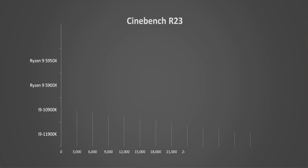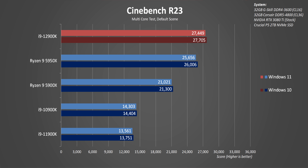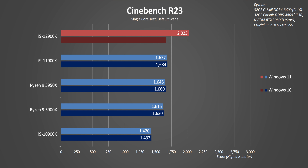Take Cinebench R23, for example. In multi-core, the stock 12900K competes with and beats the Ryzen 9 5950X in both Windows 10 and Windows 11 — a slim 5 to 6% margin, but given the fewer threads and lower price, it's an alright trade. In single-threaded, that's where Alder Lake really shines, with a score exceeding 2,000 points regardless of OS — a solid 21% lead over AMD's 5950X. One thing I noticed in both Cinebench runs is that Windows 11 seems to impact scores of both AMD and Intel CPUs slightly negatively, mostly under 1%, but it's consistent.